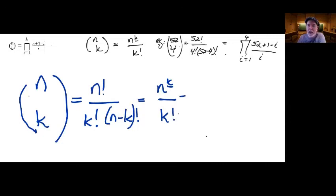And then there's a product notation where we've got i equals one to K of N plus one minus i all over i, which is exactly what we've got over here. I've just rewritten it to summarize what we've done.